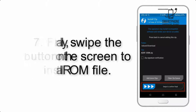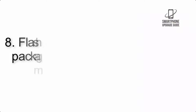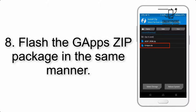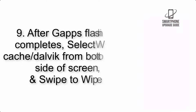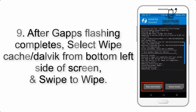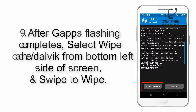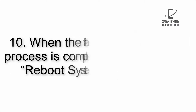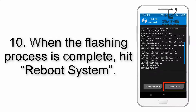Step 7: Swipe the button on the screen to install the ROM file. Step 8: Flash the GApps zip package in the same manner. Step 9: After GApps flashing completes, select Wipe Cache and Dalvik from the bottom left side of the screen and swipe to wipe.